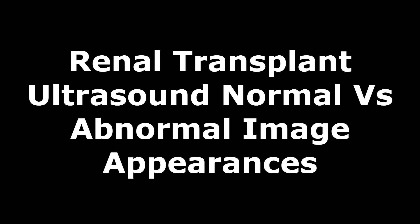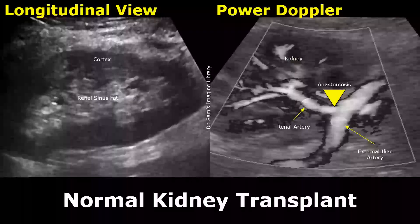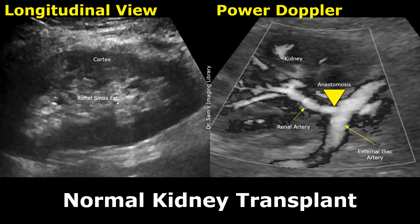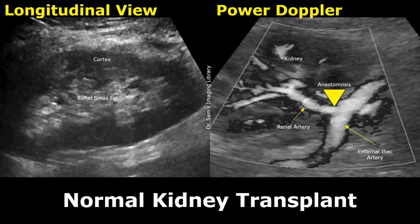Hello everyone, this is Dr. Sam and this video is about renal transplant ultrasound. These are images showing a normal kidney transplant. This is a longitudinal view. This is the outer cortex and we can see the hyperechoic renal sinus fat. Over here is a power Doppler image showing blood flow in the renal artery, and we can see the anastomosis with the external iliac artery, showing normal blood flow in this renal transplant.